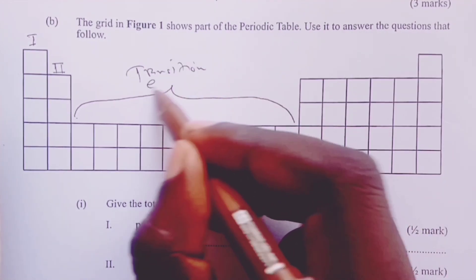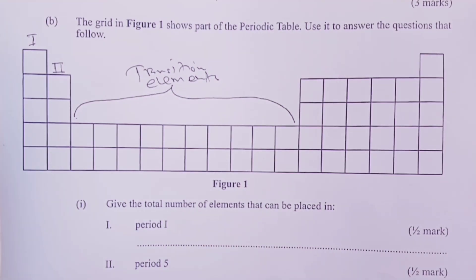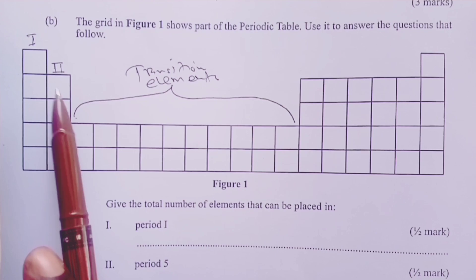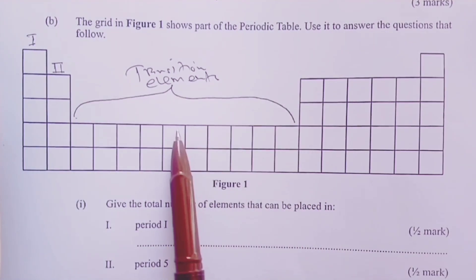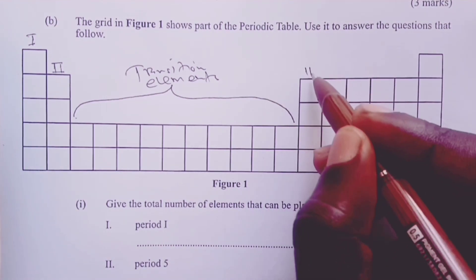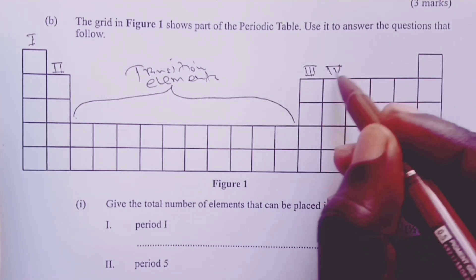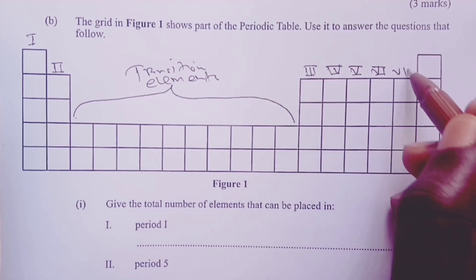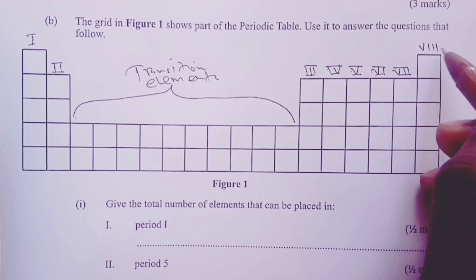Now if you look at question 1 part B, the examiner actually expected the learner to know that transition elements actually occupy 10 groups, and that is between group 2 and 3. We have transition elements that occupy 10 other groups. Then we move to group 3, then group 4, group 5, group 6, group 7, and then we end here with group 8.